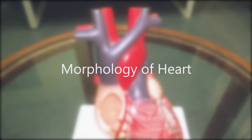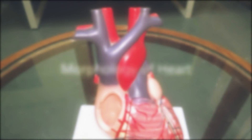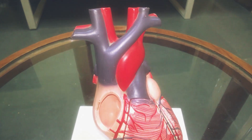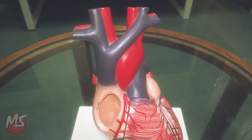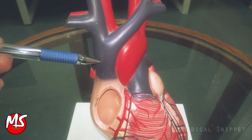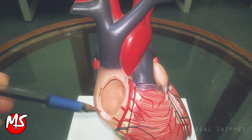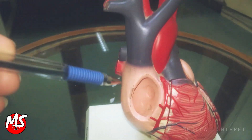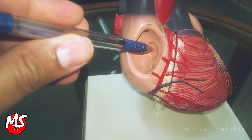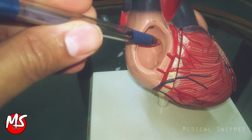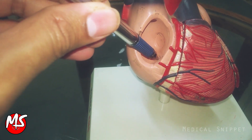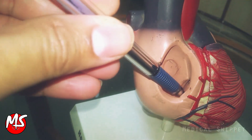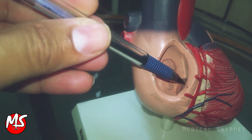Let's see the morphology of the human heart. This is the superior vena cava, opening into the right atrium. One can see the fossa ovalis. This is the coronary sinus. Now I'm passing the pen across the tricuspid valve opening into the right ventricle.